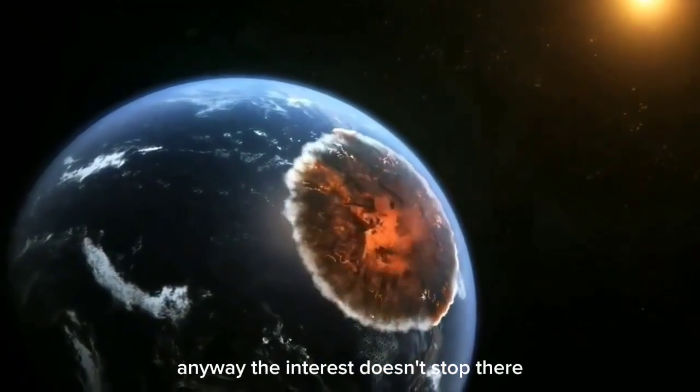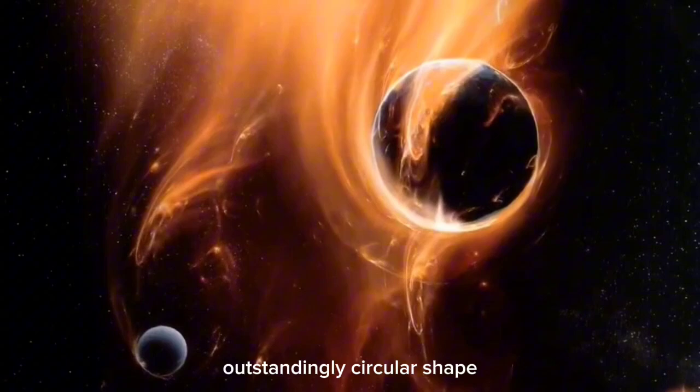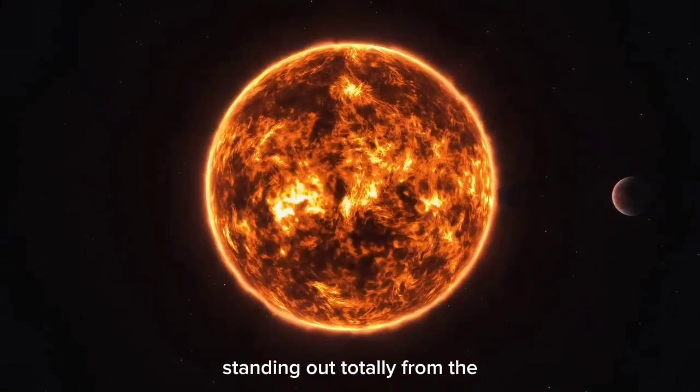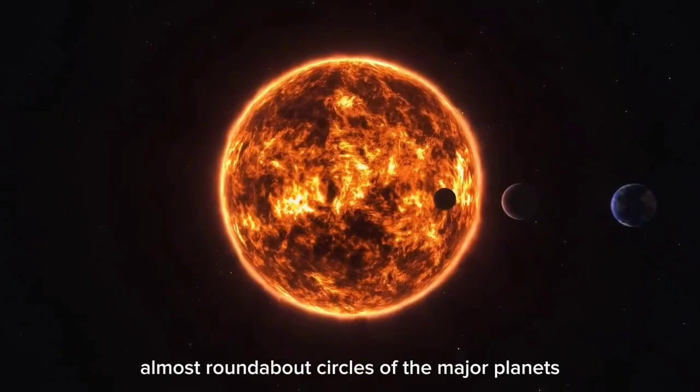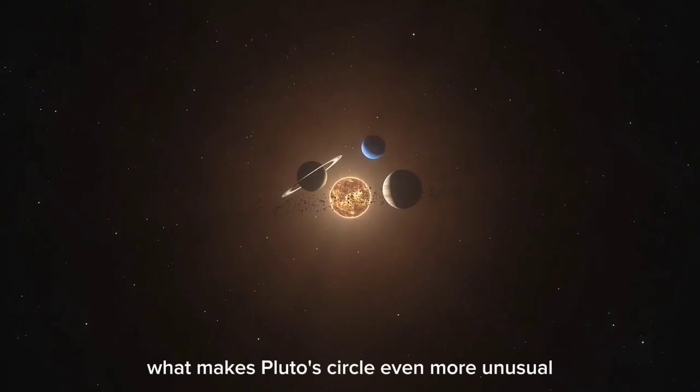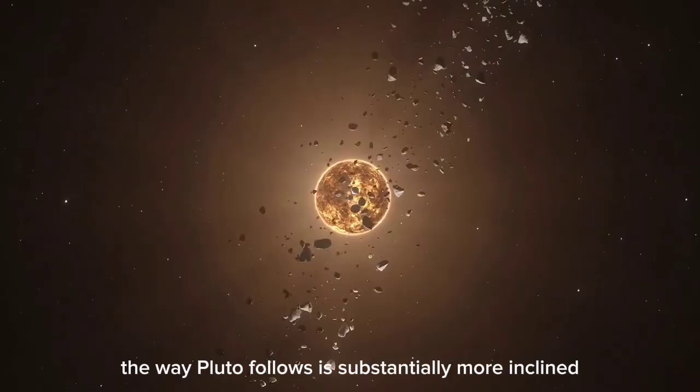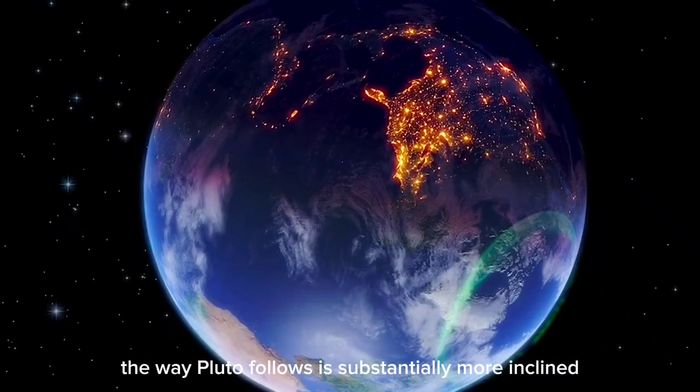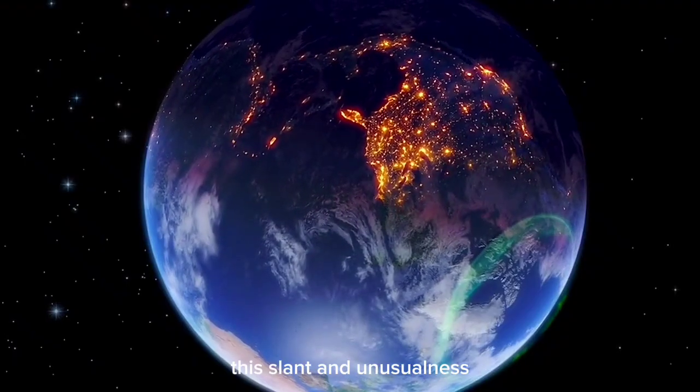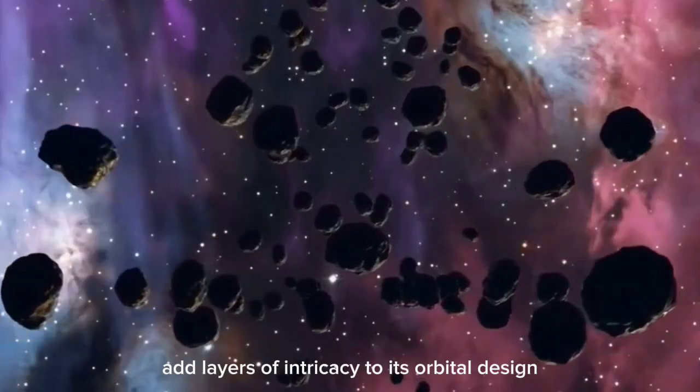Anyway, the interest doesn't stop there. Pluto's way is marked by its outstandingly circular shape, standing out totally from the almost roundabout circles of the major planets. What makes Pluto's circle even more unusual is that it is tilted at 17 degrees to the ecliptic plane. The way Pluto follows is substantially more inclined compared to the other planets. This slant and unusualness add layers of intricacy to its orbital design.